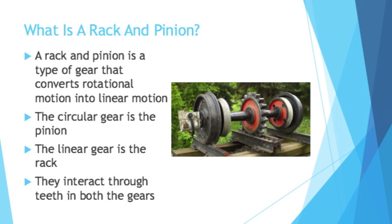That makes sense if you think about a coat rack — it's usually a pretty straight bar. They interact through teeth in both the gears. That picture shows a rail rack system, which is how some trains traveled.